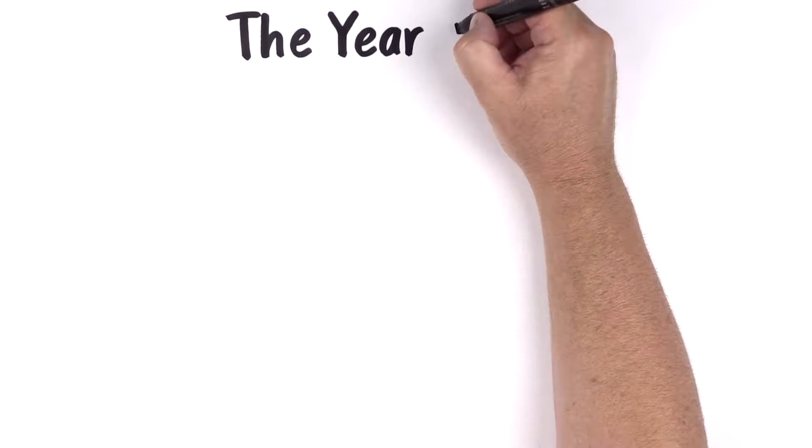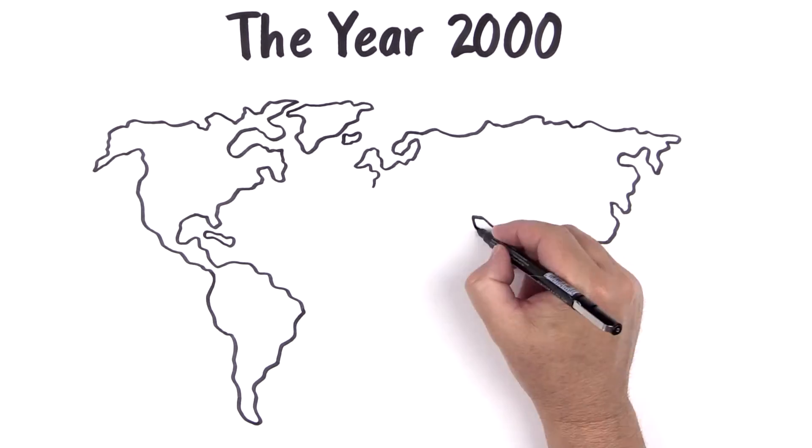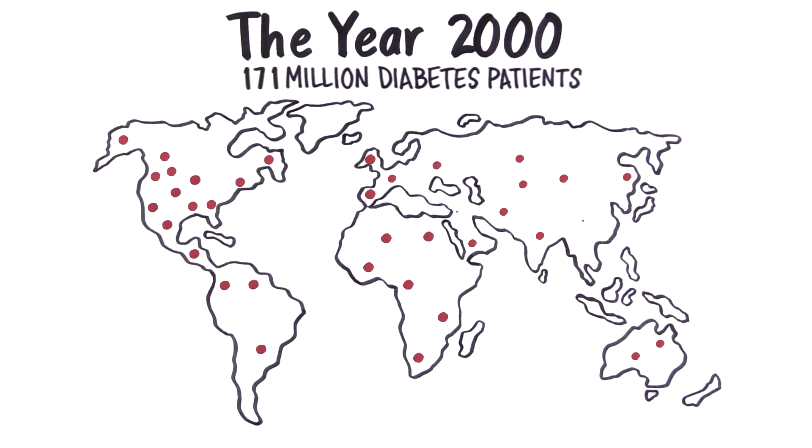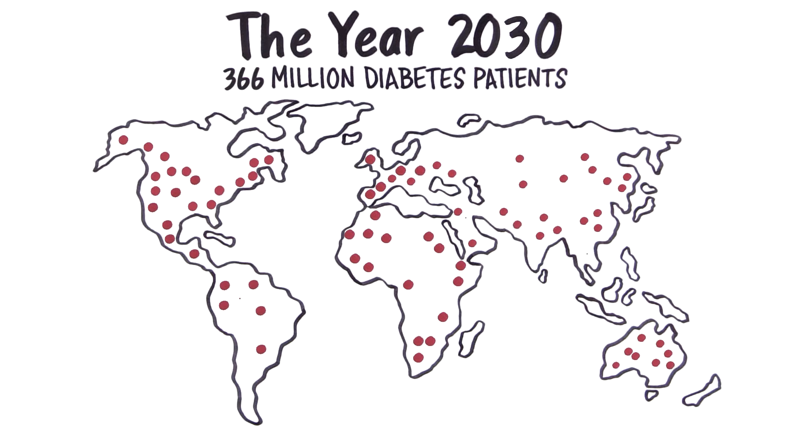The work we do is important. There are millions of people worldwide counting on me and my team to make the next discovery that leads to a cure for diabetes. By 2030, it's estimated that 366 million people will have type 2 diabetes. That's over double the amount of people who had it in 2000.